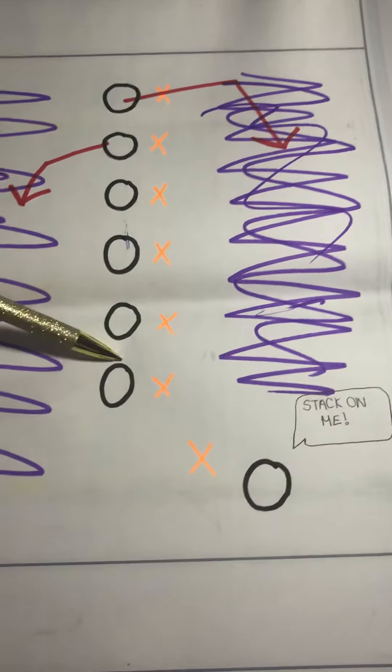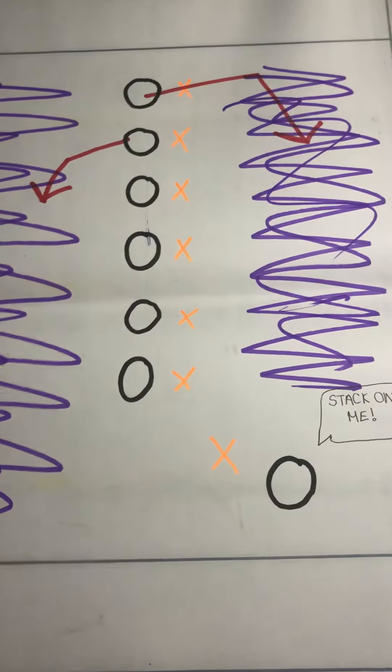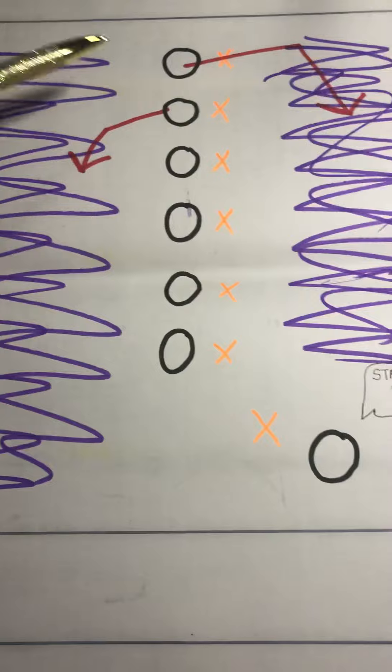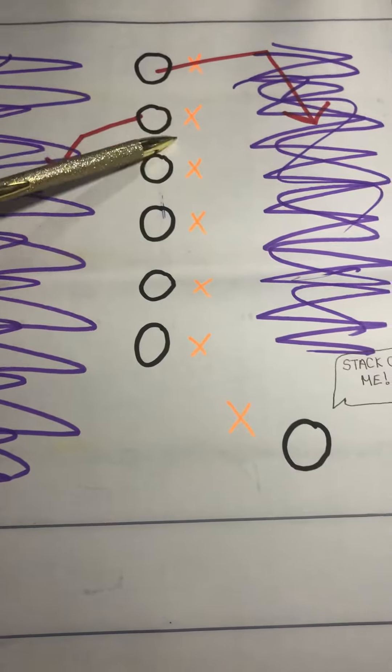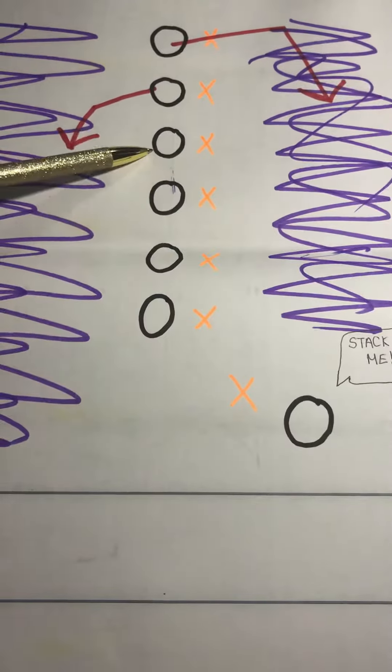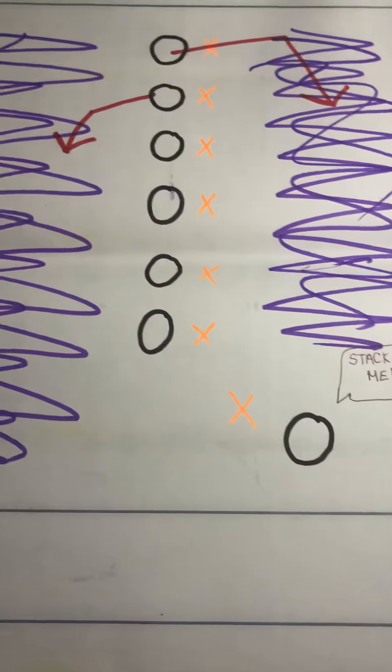These players will usually remain in the stack to kind of progress their way up the court because if these players do not receive the disc from the handler, then they will join the back of the stack and this one becomes my top player as they move up towards their end zone.